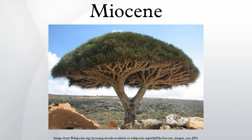Approximately 100 species of apes lived during this time, ranging throughout Africa, Asia and Europe and varying widely in size, diet, and anatomy. Due to scanty fossil evidence it is unclear which ape or apes contributed to the modern hominid clade, but molecular evidence indicates this ape lived between 7 and 8 million years ago. The first hominids appeared in Africa at the very end of the Miocene, including Sahelanthropus, Orrorin, and an early form of Ardipithecus.